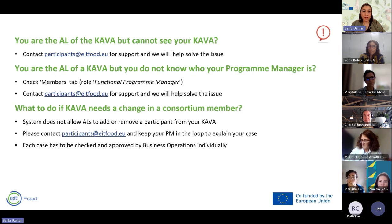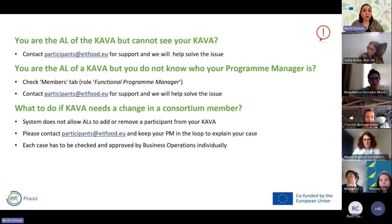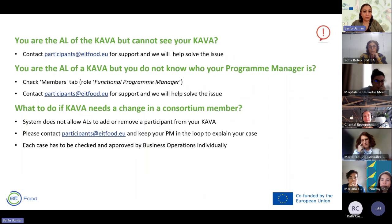If you are the Activity Leader but cannot see your KAVA, there may be a technical problem — please contact us for support. If you are not sure about your program manager, you can check this information from your Member Step in Activity Editor. If you cannot see your program manager, please contact us — some KAVAs are still waiting for program manager assignment, but they will be assigned very soon.